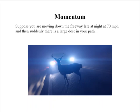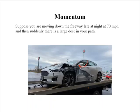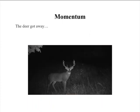Suppose you are moving down the freeway late at night at 70 miles per hour, and then suddenly there is a large deer in your path. Needless to say, you might not come out too well in the deal. The deer, of course, got away.